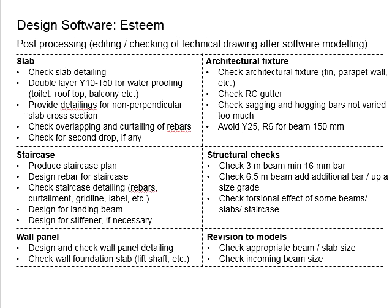Normally we cannot do everything perfectly in one go. Even when we are satisfied with our model and proceed to post-processing, we sometimes overlook certain things, making it tedious to redo. In order to maintain productivity, do some quick checking and make sure all changes due to adjustments are fully located and identified.